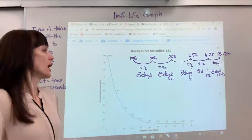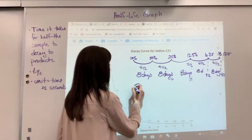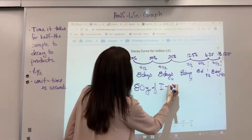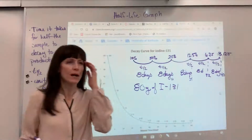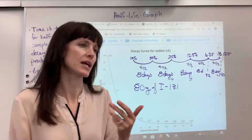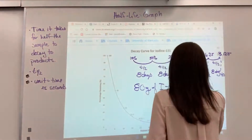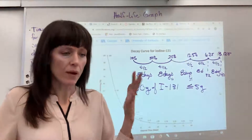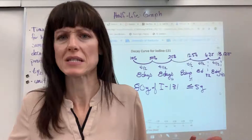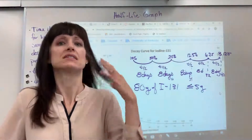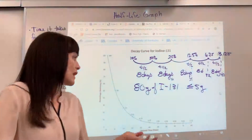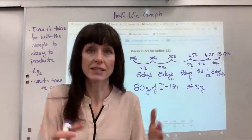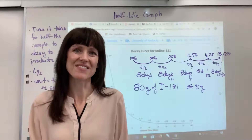Let's do an example. Let's say we have 80 grams of iodine-131 and I want to know how long it's going to take until we get to less than or equal to 5 grams. Maybe I can't transport this material until it's less than 5 grams of radioactive iodine. How long do I have to let this sit until it decays down to 5 grams?